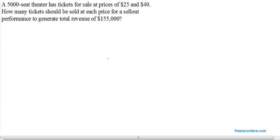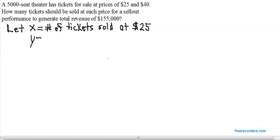How many things are we being asked to find here? Two - we're being asked to find how many tickets are sold at the $25 price and how many tickets are sold at the $40 price. Since we're being asked to find two things, we need two variables and I will use Y and X. Let X equal the number of tickets sold at the $25 price, and let Y equal the number of tickets sold at the $40 price.